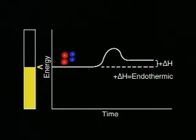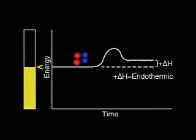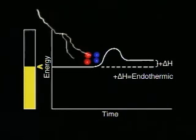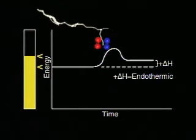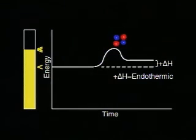In the air, nitrogen and oxygen are continually colliding but lack sufficient energy to react. Heat from lightning supplies the activation energy to break bonds and new bonds form in an endothermic reaction that absorbs energy.